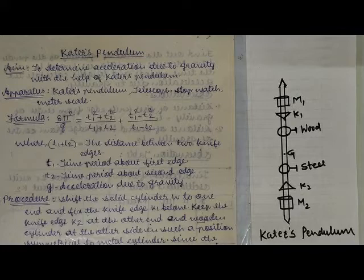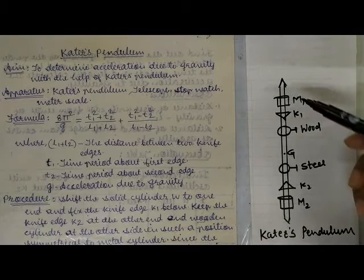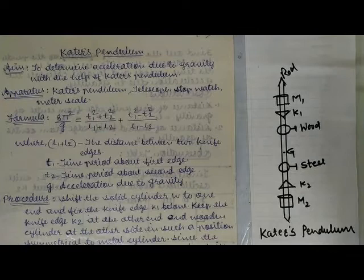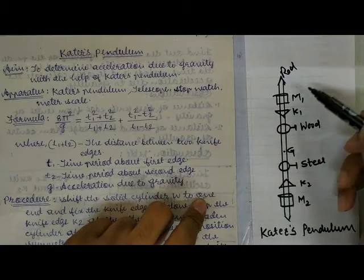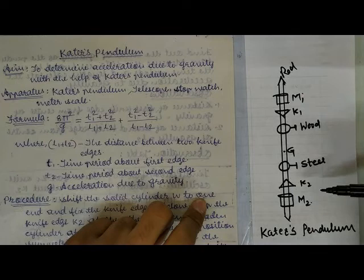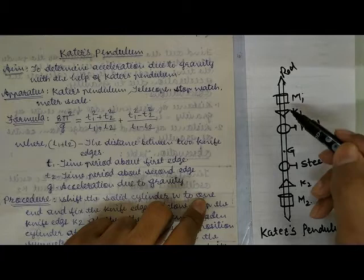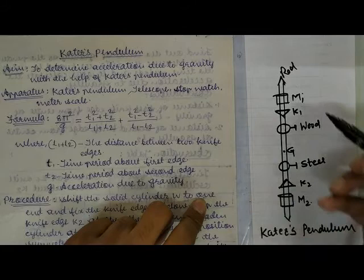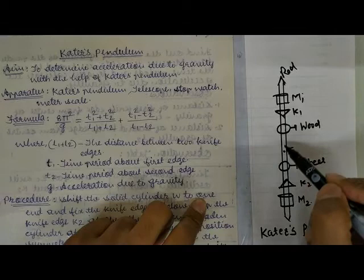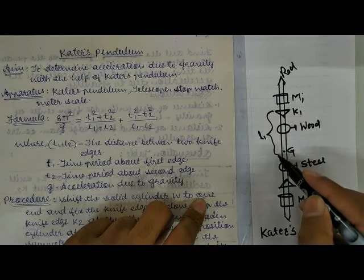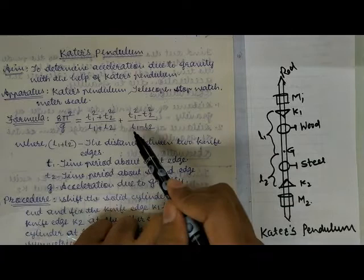In the diagram, you will find one vertical rod — a solid steel rod. To that rod, we have two masses M1 and M2 attached at either end. We also have to find where exactly the centre of mass is, and from that centre of mass, the distances to the knife edges. There are two knife edges at the two ends, denoted K1 and K2. The distance of the first knife edge from the centre of mass is named L1, and similarly the distance of the second knife edge from the centre of mass is named L2.